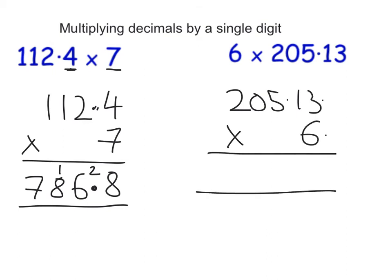6 times 3 is 18, so 8, carry 1. 6 times 1 is 6, add on the 1, that's 7. 6 times 5 is 30, so 0, carry 3. 6 times 0 is 0, add on the 3. 6 times 2 is 12.